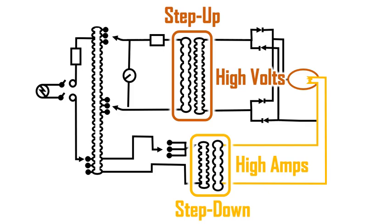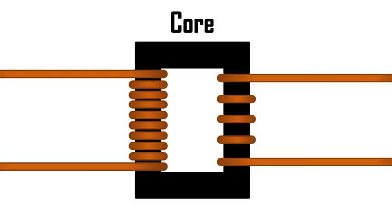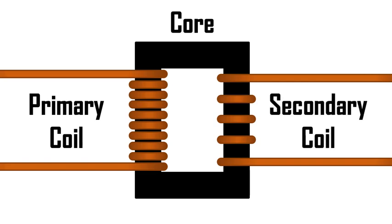A step-down transformer decreases the voltage but significantly increases the amperage of the circuit. A transformer is made of three distinct parts. There is a core, a primary coil where the electricity comes into the transformer, and a secondary coil where the electricity comes out of the transformer. Notice that the transformer has no moving parts.